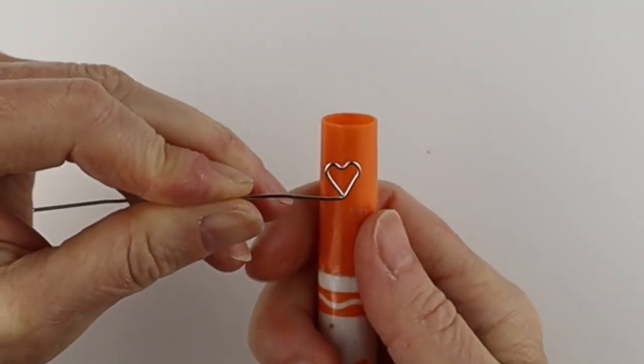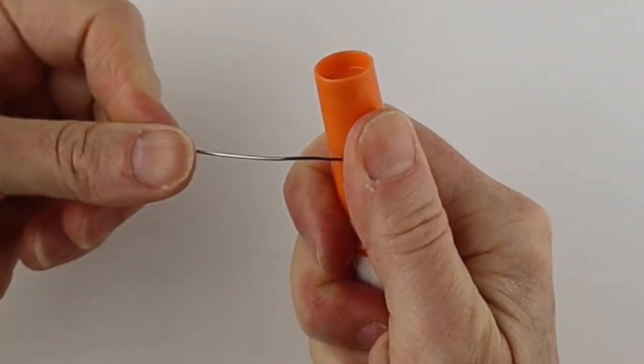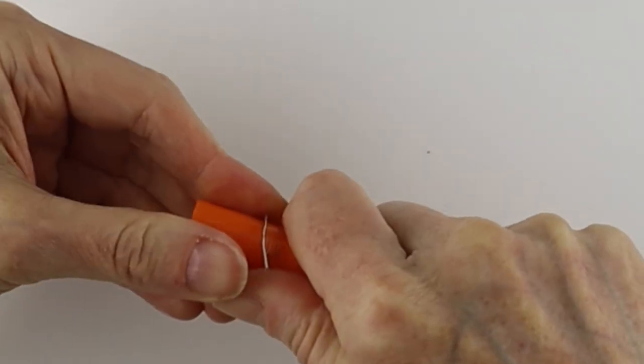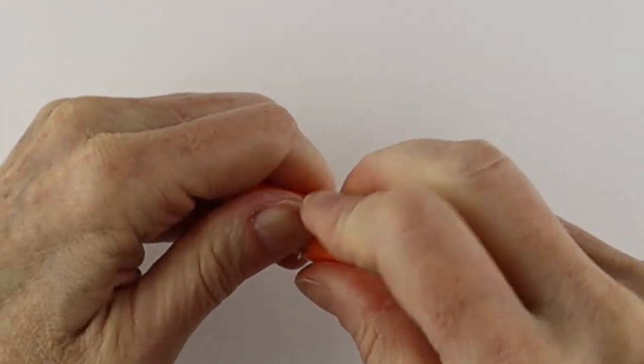And then I'm going to get a round form or a ring cone. Hold it on there and bring the wire all the way around.